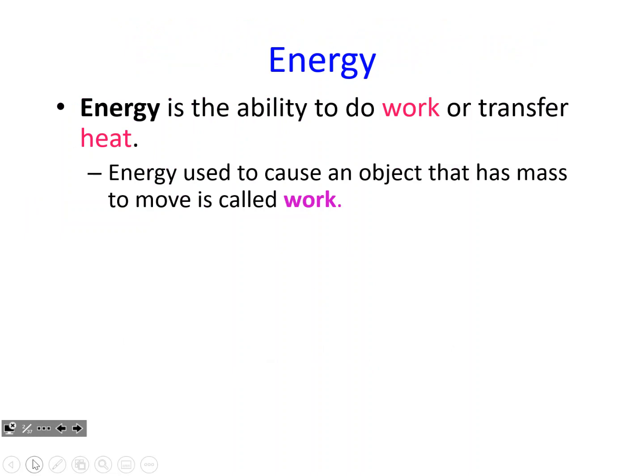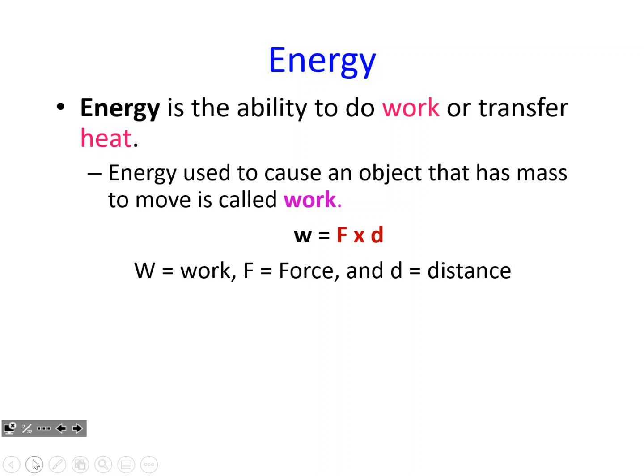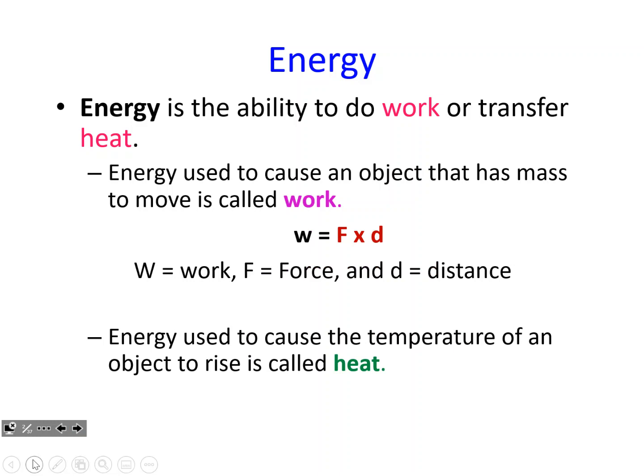Let's identify some terms before we get to those calculations. Energy is the ability to do work or transfer heat. Energy used to cause an object that has mass to move is called work — the equation is force times distance. Energy used to cause the temperature of an object to rise is called heat. We'll eventually whittle that down through some derivations into just delta H, the heat of reaction.